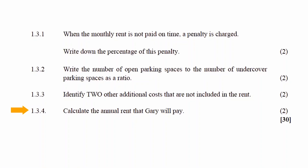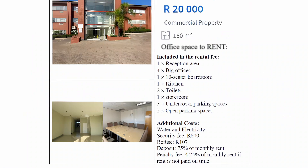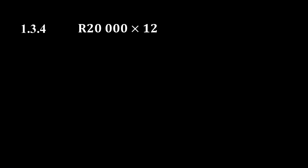In question 1.3.4, you have to calculate the annual rent that Gary will pay. The advertisement lists the monthly rent as 20,000 Rand. The annual rent is calculated by multiplying the monthly rent by the 12 months of the year, which gives us an annual rent of 240,000 Rand.